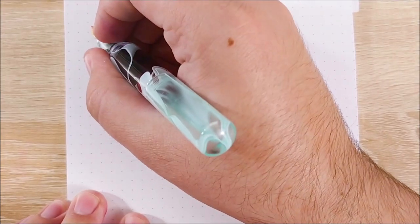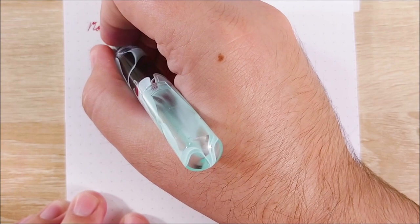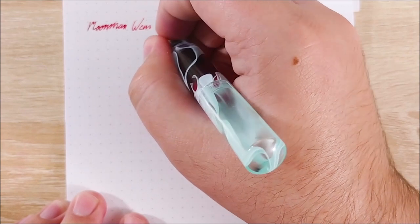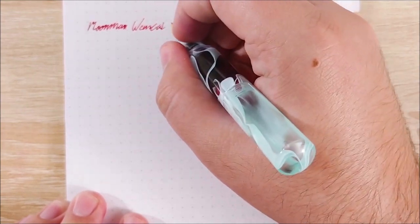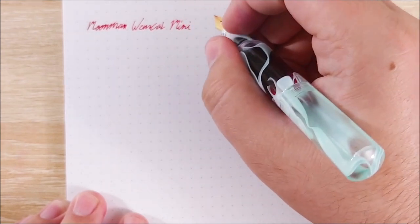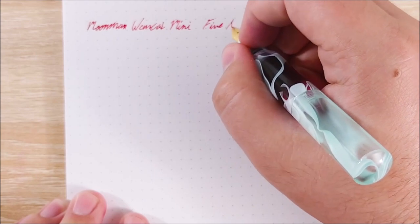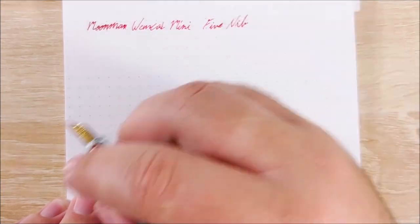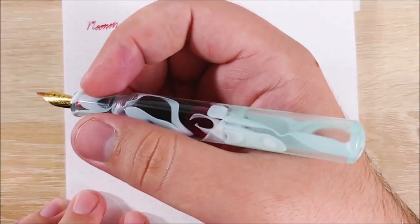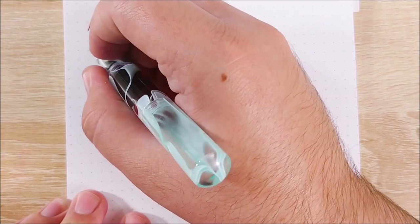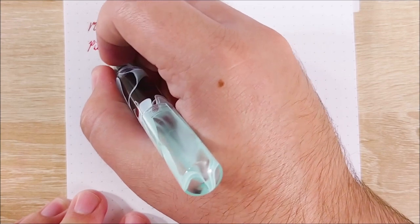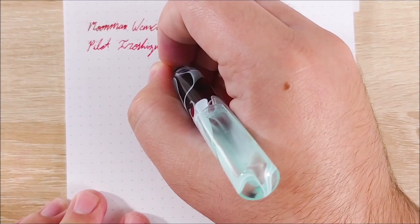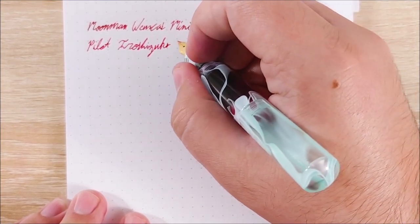Alright, on to the writing sample. So, again, this is the Moonman Wankai Mini. And it's a fine nib. Which is actually the only one that I could find this pen offered in. I really like the nibs on the M2 a lot better. And I kind of wish that they had offered a bit more of a variety with this. But it's okay-ish, I guess. And the ink, for those of you curious, as I mentioned earlier, is Pilot Iroshizuku Momiji.